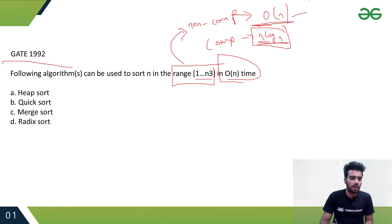In the options, we can clearly see that Radix Sort, option D, is the non-comparison based sorting algorithm, and it can solve this in O(n) time. So option D is the right answer.